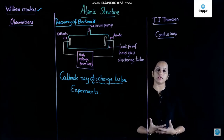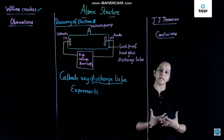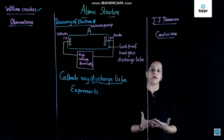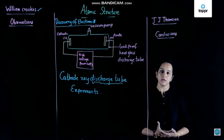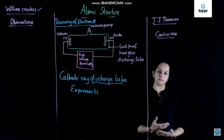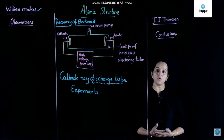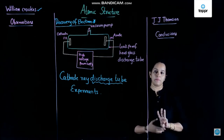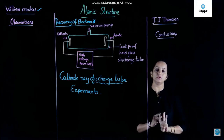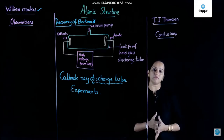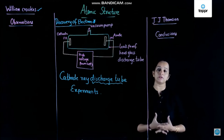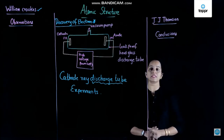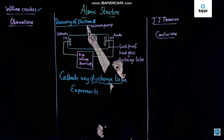Itna pata chal chuka tha ki atom naam ki cheez matter mein hai, aur aisa maana ja raha tha ki atom ko hum further divide nahi kar sakte. Lekin kaafi saare experiments ke saath pata chala ki atom ko hum further subdivide kar sakte hain teen particles mein: pehla hai electron, proton, and neutron. So let us begin with kaise pata chala ki electron is also present. So here we begin with the discovery of electrons.